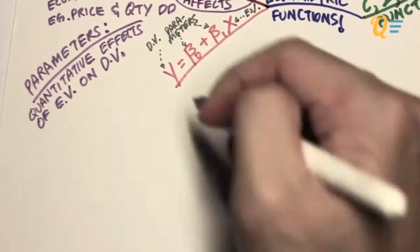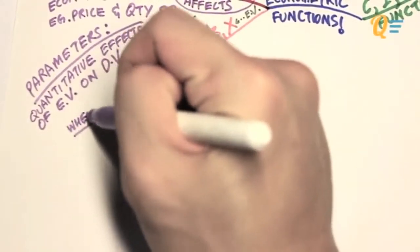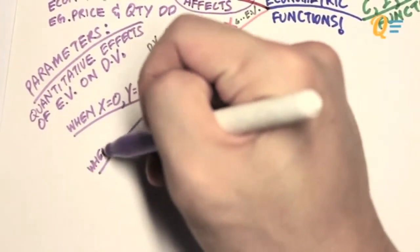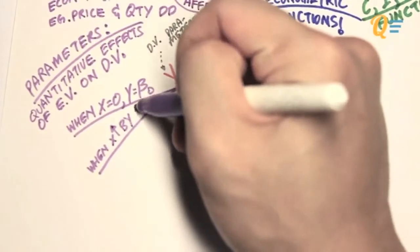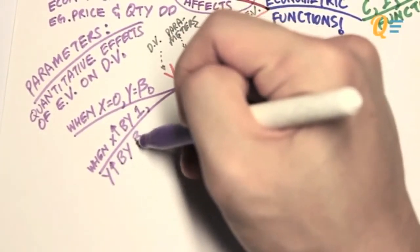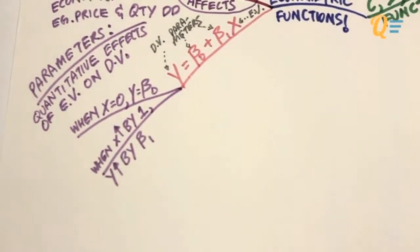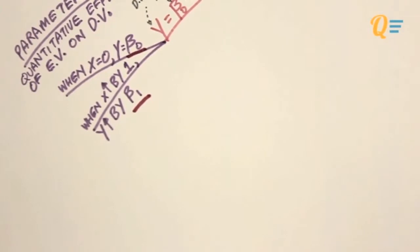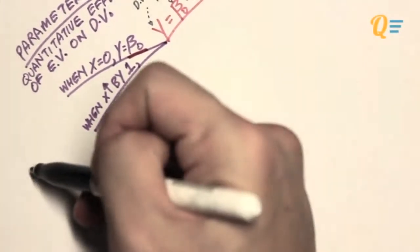I believe that you're starting to see that this is similar to a linear function. Because when x is equal to 0, y is equal to beta0. And when x is going to increase by 1 unit, y is going to increase by beta1. So I believe you can see that the parameters beta0 and beta1 give a quantitative effect to x and y.